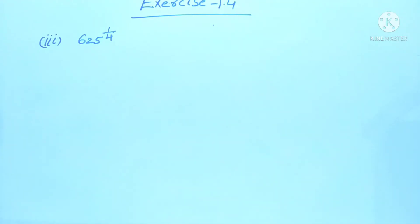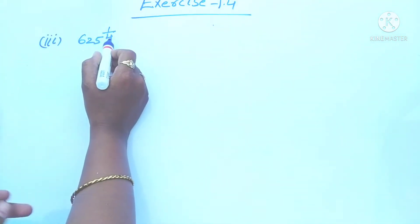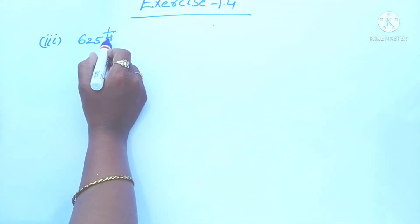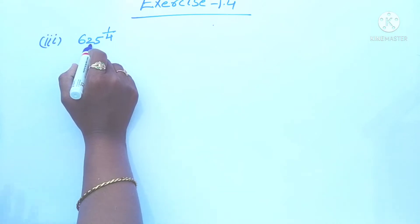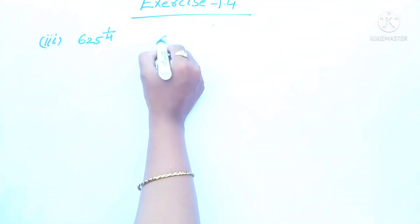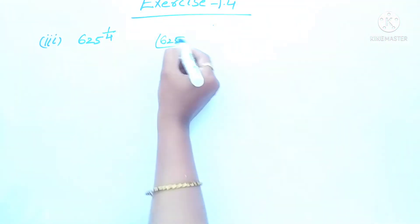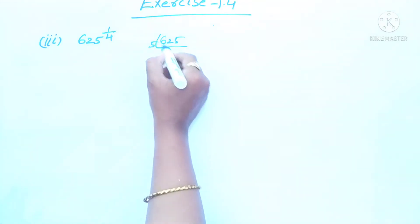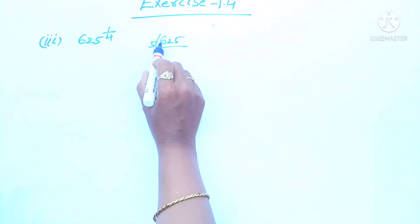Next, our third problem: 625 to the power 1 by 4. Since 4 is in the denominator, we have to check whether we can write 625 as something to the power of 4.